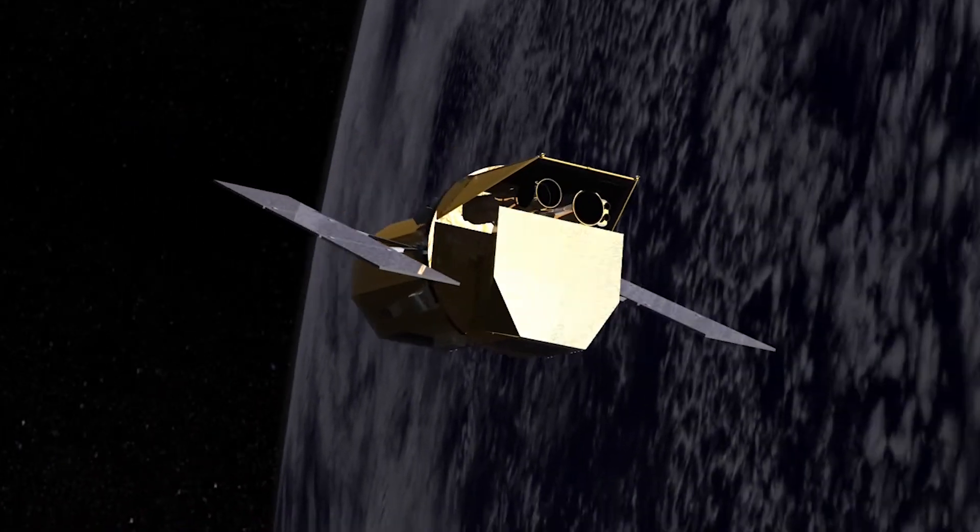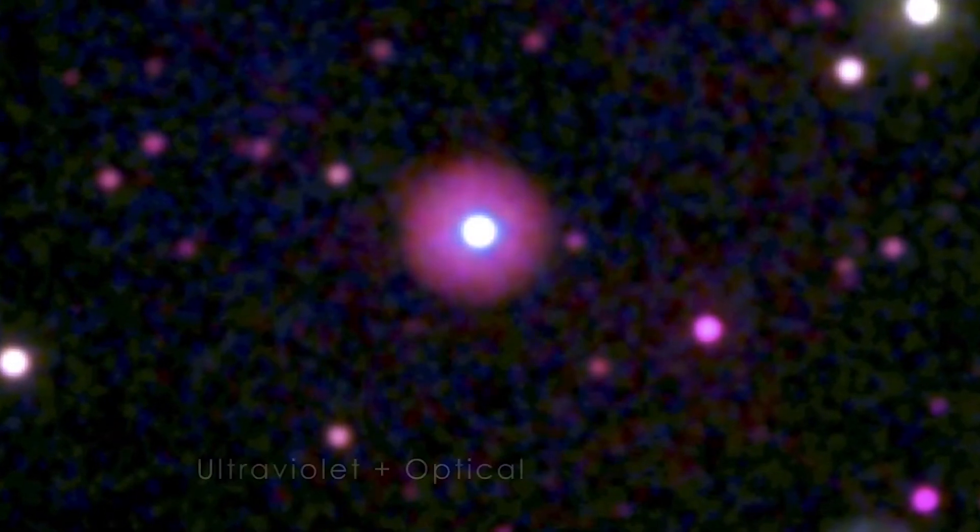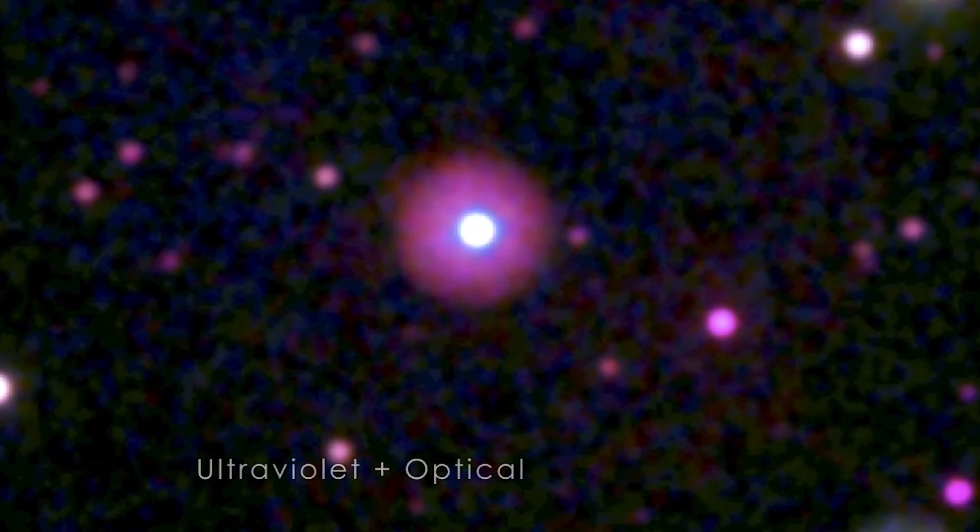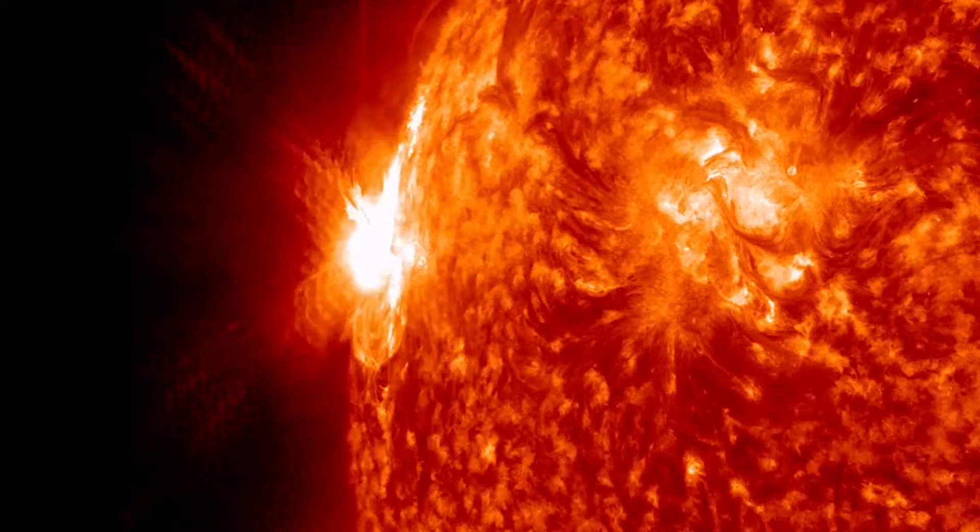The same astronomers were also watching the star with NASA's Swift satellite. Just eight hours before Hubble was scheduled to look for the planet's atmosphere, Swift saw the star erupt in a powerful X-ray flare. Similar flares happen frequently on the sun.